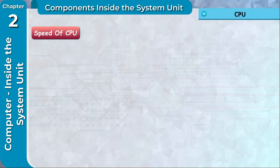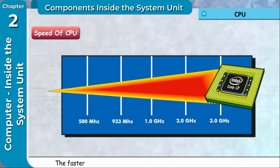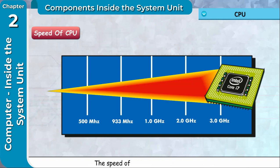Speed of CPU: The speed of CPU is measured in Megahertz (MHz) or Gigahertz (GHz). The faster the speed of the CPU, the faster the computer can operate. The speed of CPU is increasing day by day.